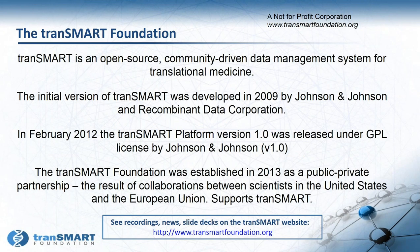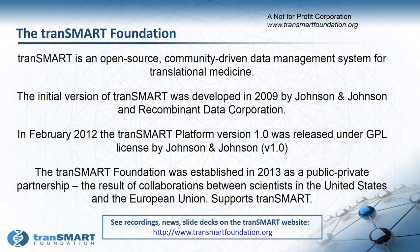TransMART is an open-source, community-driven data management system for translational medicine. The initial version of TransMART was developed in 2009 by Johnson & Johnson and Recombinant Data Corporation. In February 2012, the TransMART platform version 1 was released under GPL license by Johnson & Johnson. The TransMART Foundation was established in 2013 as a public-private partnership, the result of collaborations between scientists in the United States and the European Union. Since then, TransMART Foundation supports TransMART, but the platform does not belong to the foundation — the foundation facilitates the platform's development and brings the community together. You can find information about the TransMART Foundation and the platform on the website link shown at the bottom of the slide.